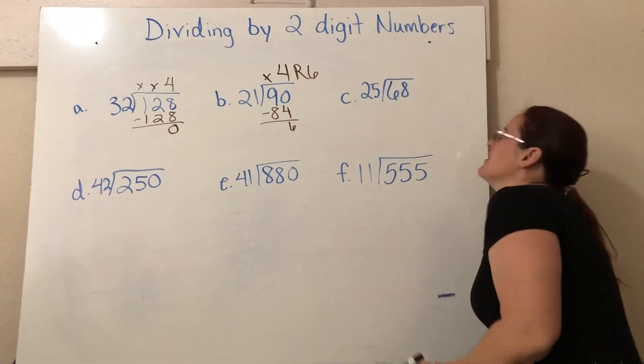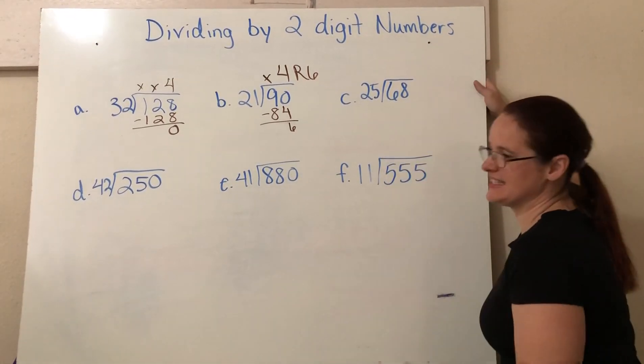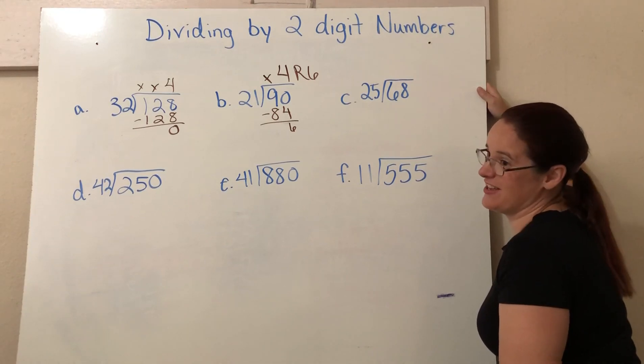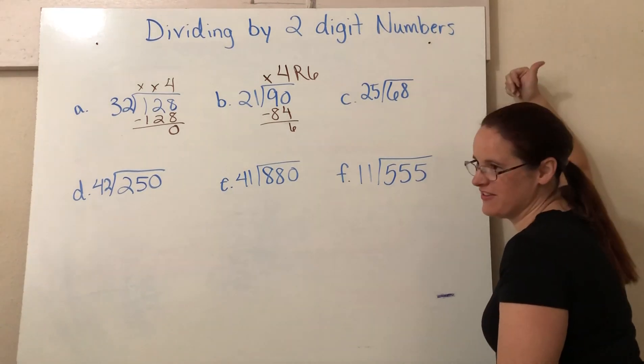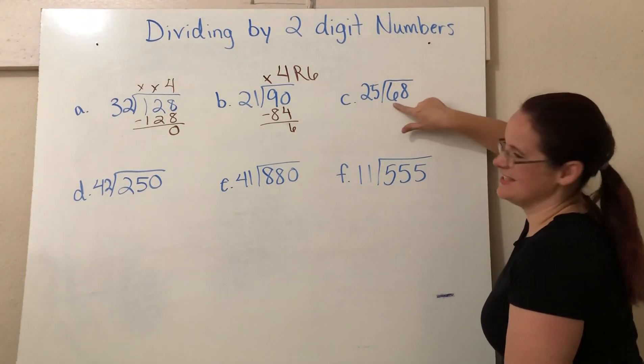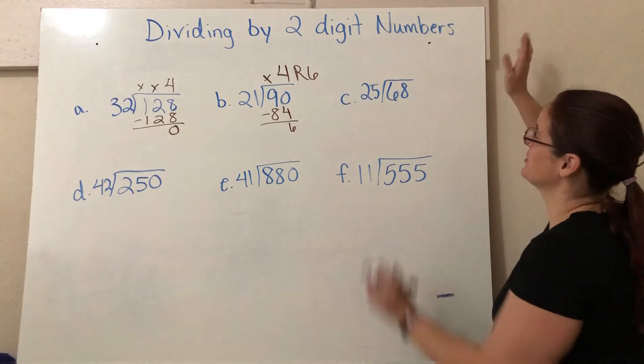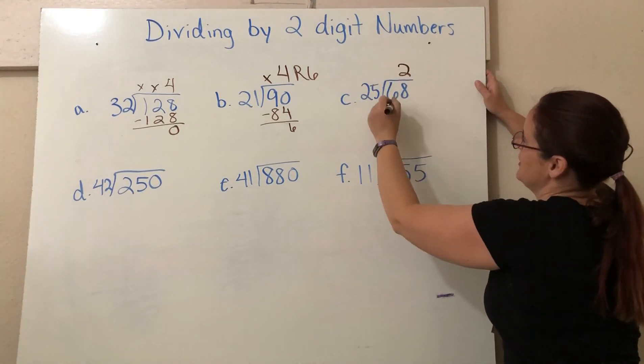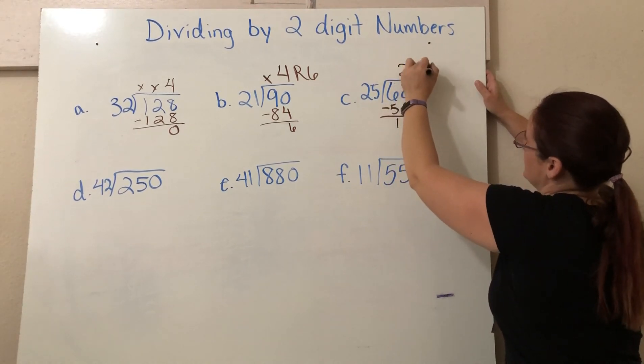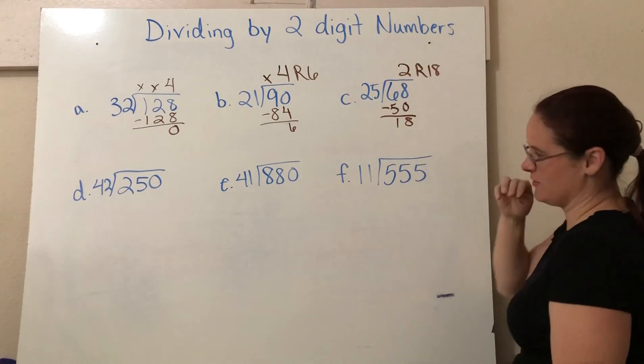Okay, here. 25 into 68. You know what? We know how to count by 25s. So let's do it. 25, 50. Oh, but that's too much. 75 is too much. So we're just going to go in two times. We know that two times 25 is 50. And then we can subtract for a remainder of 18.